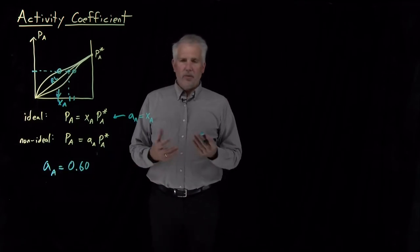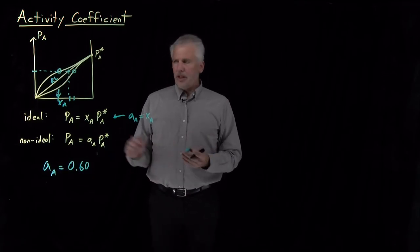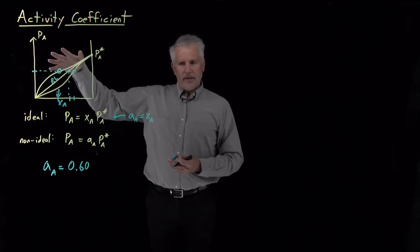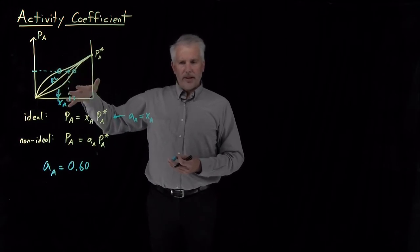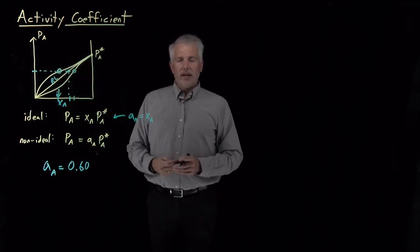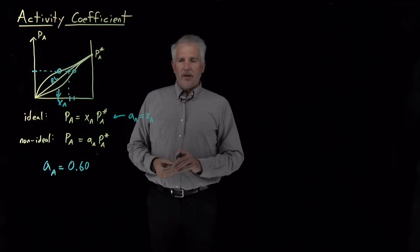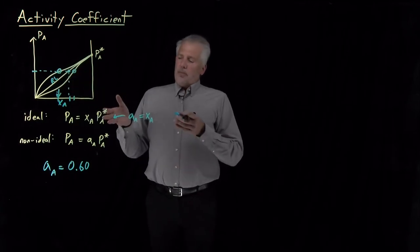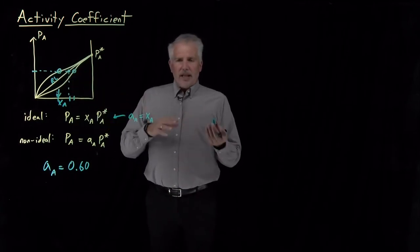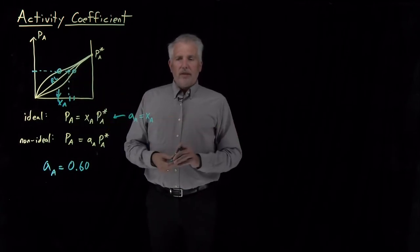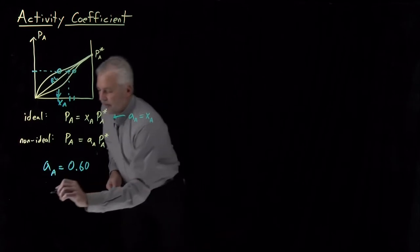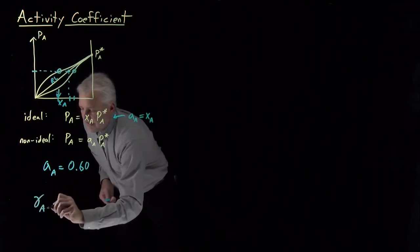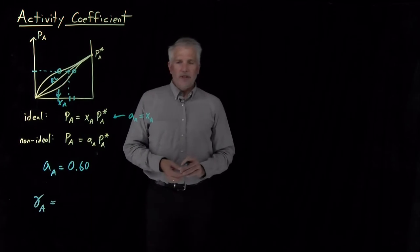Often, we'd rather intuitively think about whether we're above or below — are we exhibiting positive or negative deviations? That's a more intuitive way to think about how the solution is behaving rather than thinking about the mole fraction the ideal solution would have had to have. So often, what we talk about instead is not the activity, but the activity coefficient.